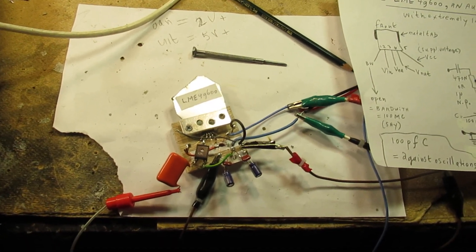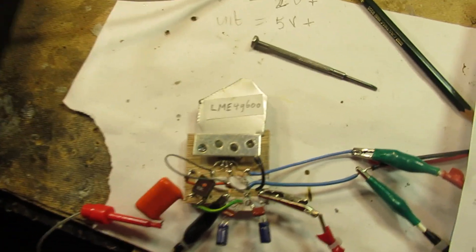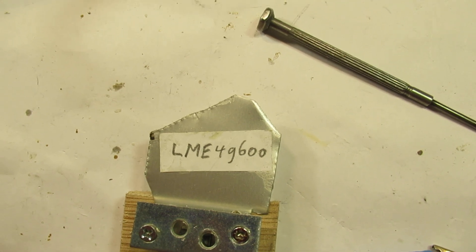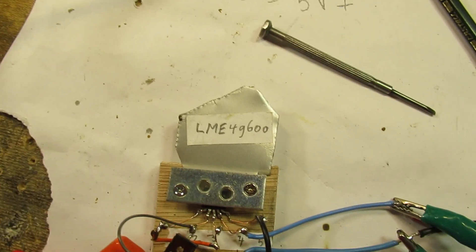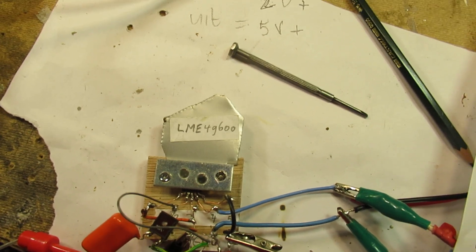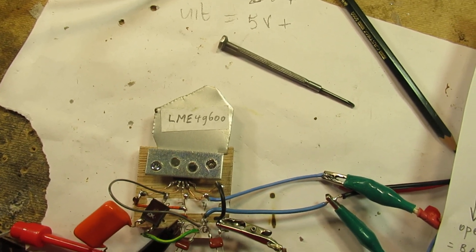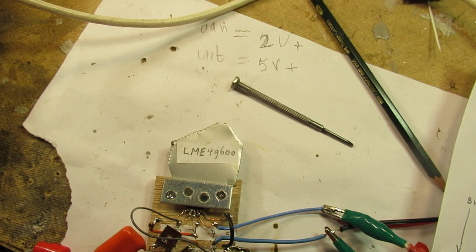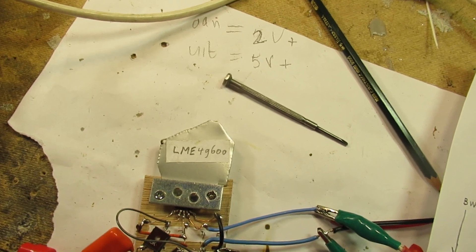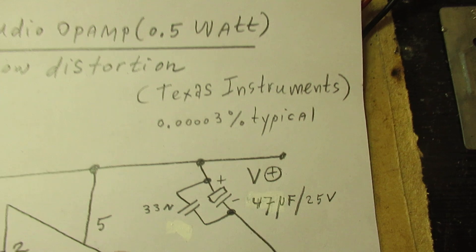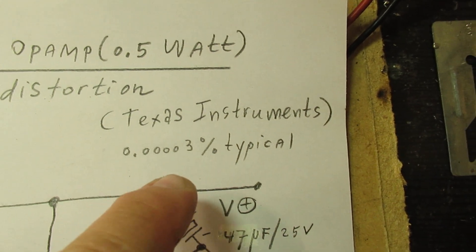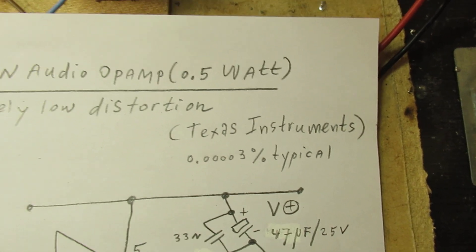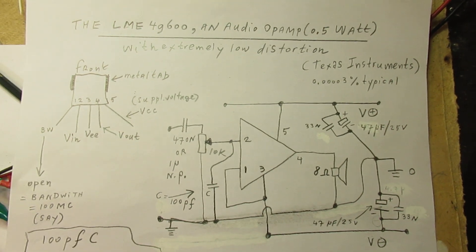I got from a friend of mine this beautiful chip, the LME49600. When you go to the datasheet you can see that it is an op amp in a certain way, but an op amp that has an enormous low distortion - say this value 0.0003% typical. It is from Texas Instruments and this is the schematic that I made with it.